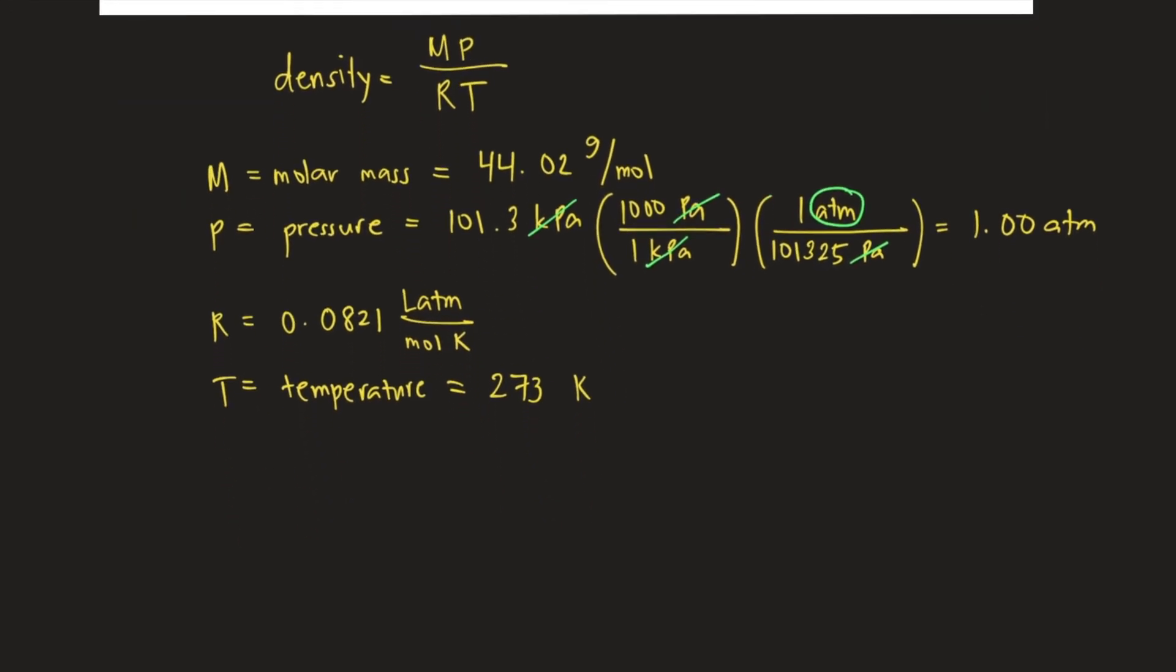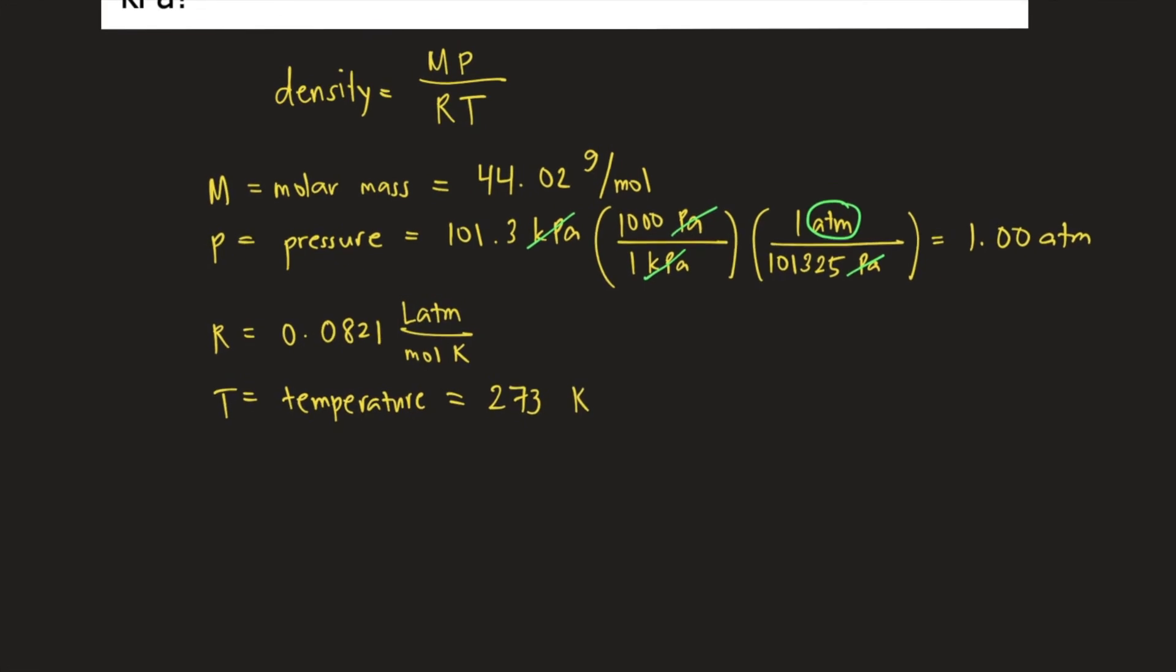If we plug everything into the equation, density equals 44.02 grams per mole times the pressure, 1.00 atm, divided by R.